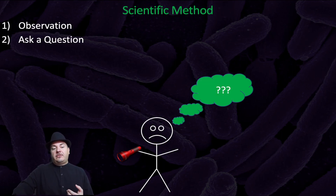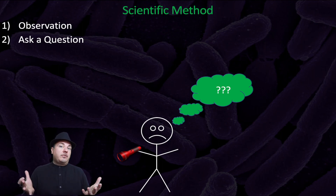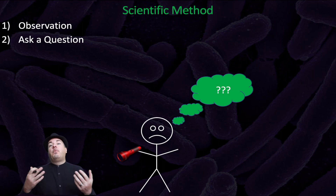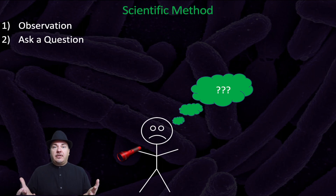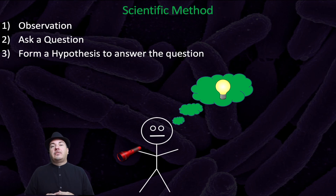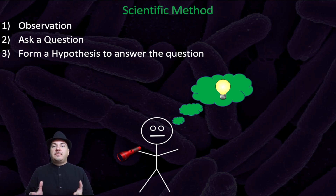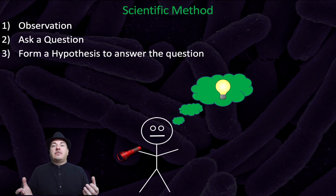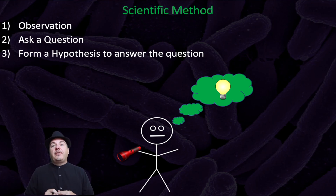From that observation, it will generally cause you to ask a question — for example, why is my flashlight not working? From that question, you'll form a hypothesis to answer it. Sticky, you think your flashlight is not working because the batteries are dead. That's a valid scientific hypothesis — it's your best guess of what you think is happening, and it's a testable hypothesis.